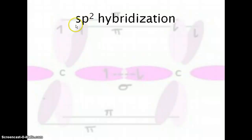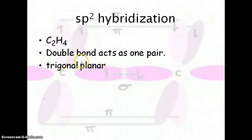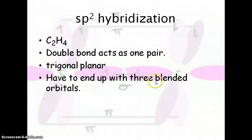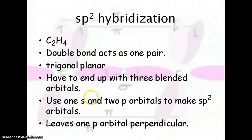Let's move on to sp2 hybridization. A good example is C2H4. With sp2, you're going to have three different bonding lobes — this occurs in trigonal planar geometry. We end up with three blended orbitals to satisfy that trigonal planar geometry. This leaves one p orbital that is not hybridized — we hybridize two of the p orbitals with the s to make the sp2s, and that leaves us one regular p orbital.